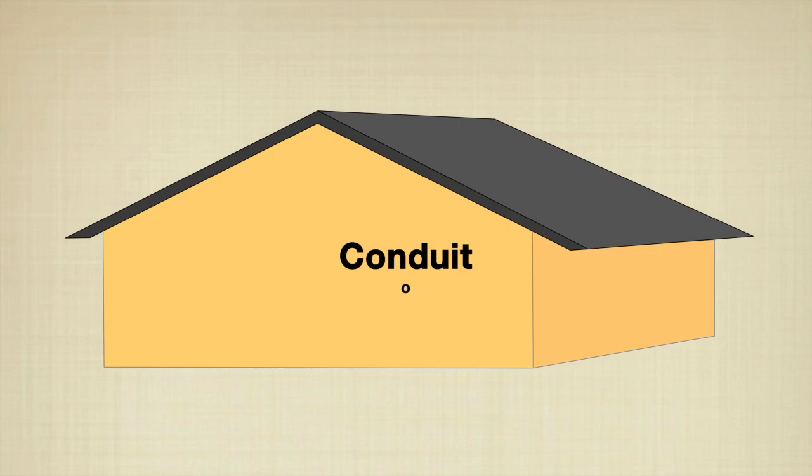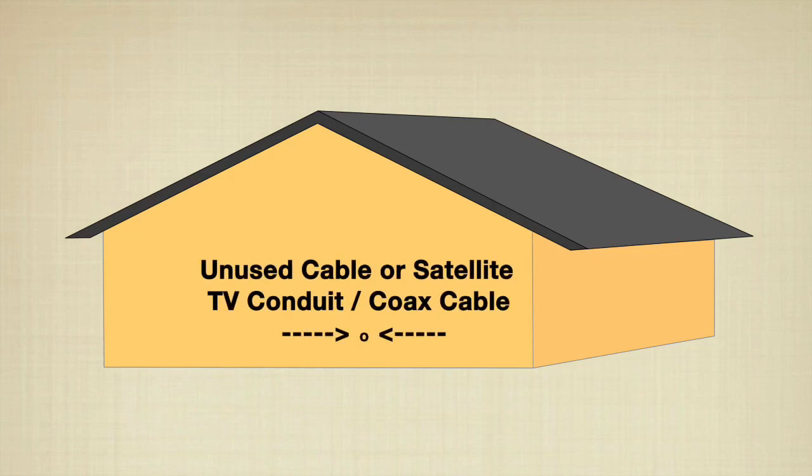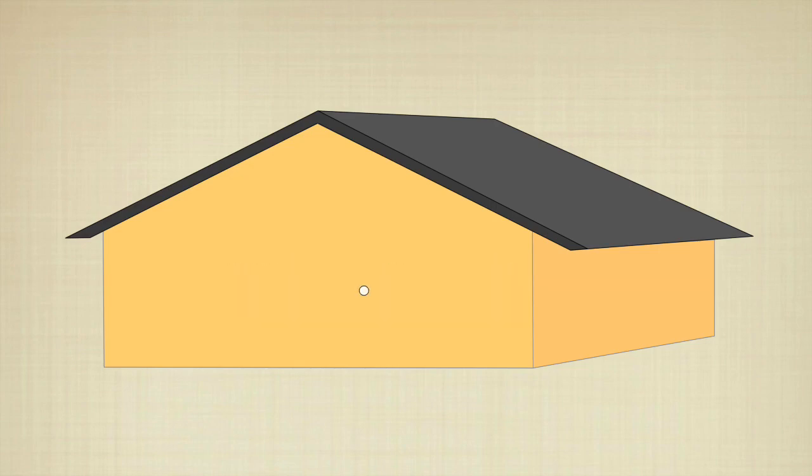One of the first considerations is where the antenna cable will enter the home, the cable conduit. You might be able to utilize an unused cable or satellite TV conduit and coax. Try to keep the conduit close to antenna location.